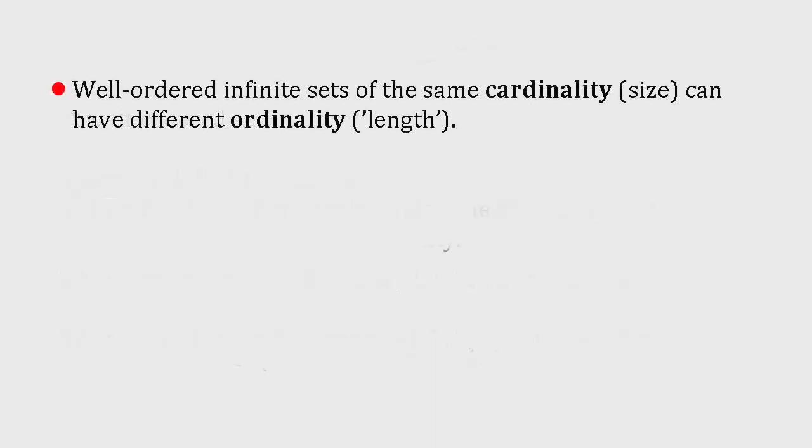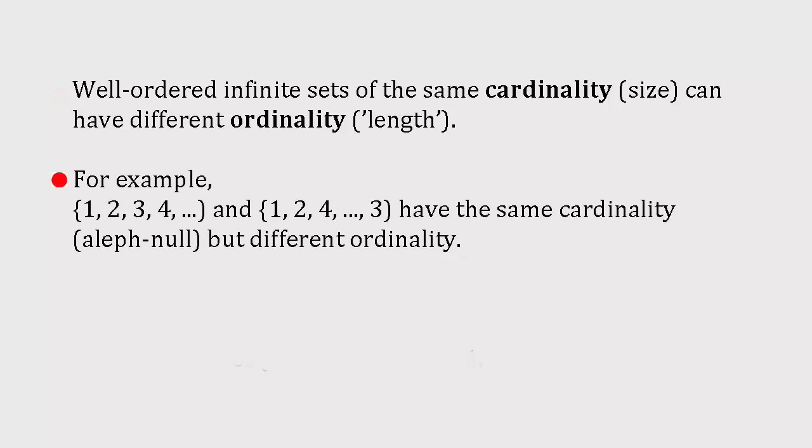A key point is that well-ordered infinite sets of the same size or cardinality can have different lengths. Strictly speaking, we should say different ordinalities, but talking about lengths helps to appreciate what's going on. Think about the sets {1, 2, 3, 4, ...} and {1, 2, 4, ..., 3}, where the three dots mean carry on forever.